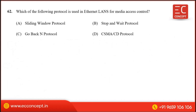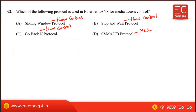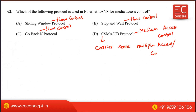The question asks which protocol is used in Ethernet for medium access control. The sliding window protocol and stop-and-wait protocol are flow control protocols. Go-back-N protocol is also a flow control process. CSMA/CD — Carrier Sense Multiple Access with Collision Detection — is used for medium access control.